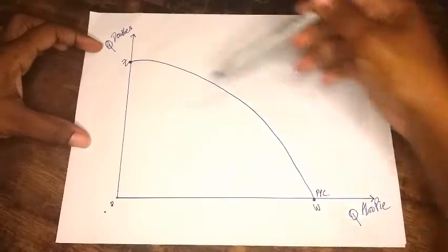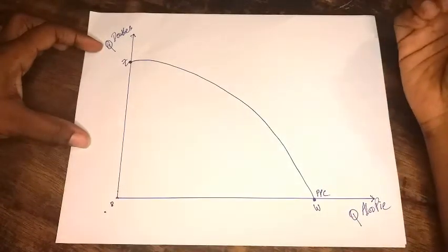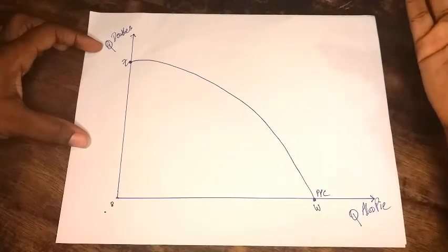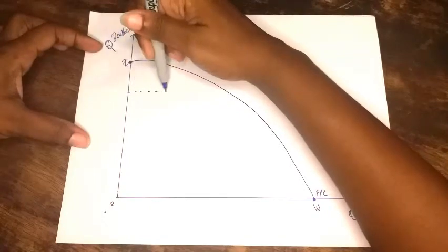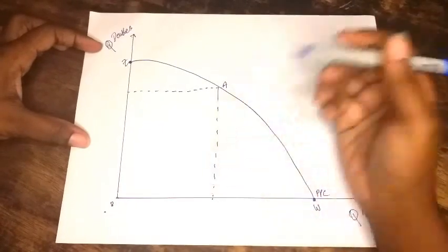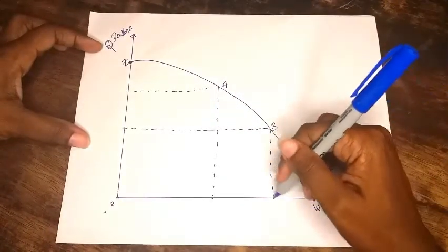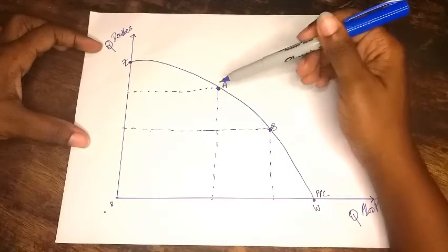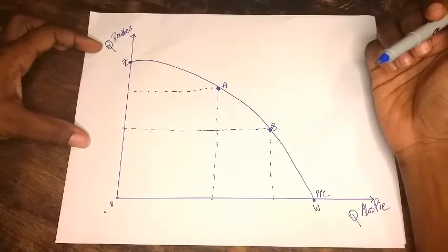Anywhere along this line, this boundary, this frontier, this curve, anywhere along this curve is considered to be efficient points. As a matter of fact, they are considered to be what we call Pareto efficient or Pareto optimal. So we might have a point such as this. You can call this one A, and we can have another point such as B. Point A is just as efficient as point B, even though they are using different combinations of resources.